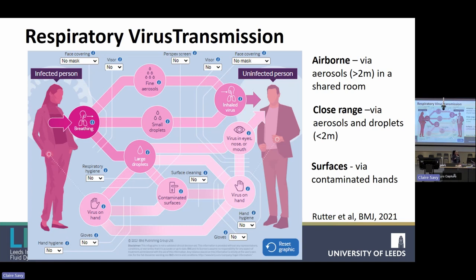Interestingly, for TB you can be fairly sure it's airborne, because to be infected you have to receive the particle down into your deep lung — so it has to be less than five microns in size. For COVID, you have receptors for the virus all the way through your respiratory system, so any size of particle can cause infection. We did an expert elicitation asking epidemiologists, virologists, and aerosol scientists about the contributions of each route. We saw quite a divergence of opinions, and you can actually play with the sliders on the model on the MJ website to look at relative effects.